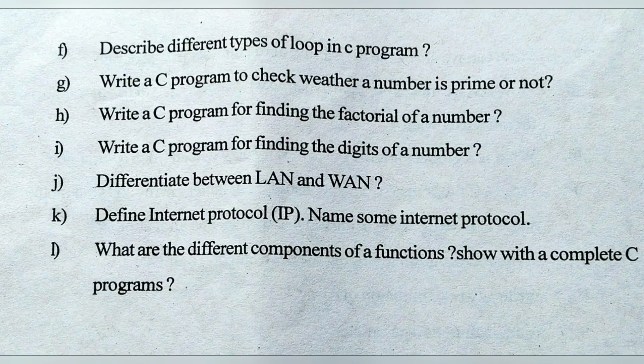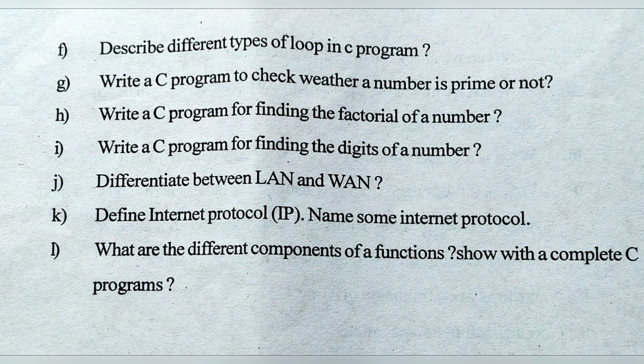Describe different types of loops in a C program. There are three types: for loop — when we know how many times the loop should run, we use for loop. While loop — if we want to run a loop as long as the condition is true, we use while loop. Do-while loop — if we want to run a loop at least once even if the condition is false, we use do-while loop. Also, for and while are entry-controlled loops and do-while is an exit-controlled loop.